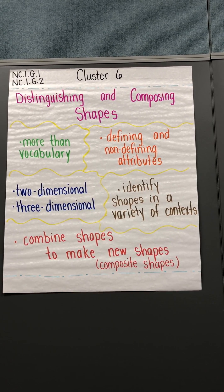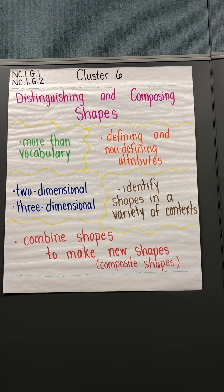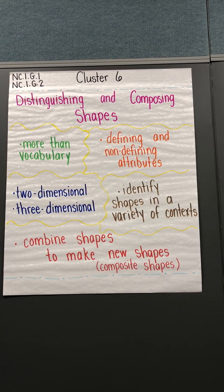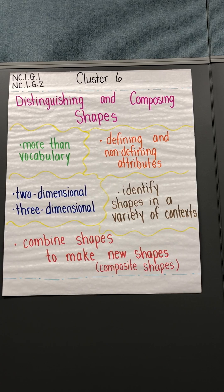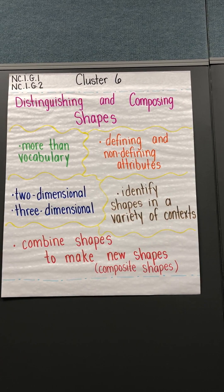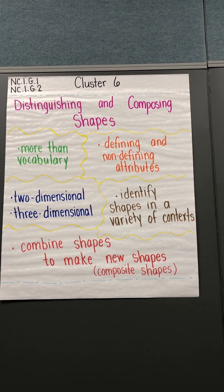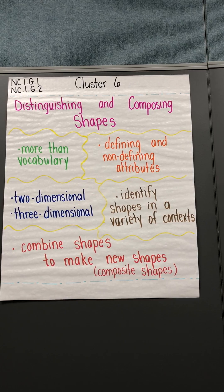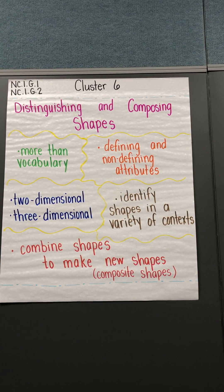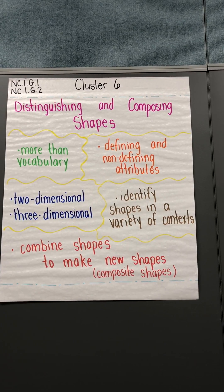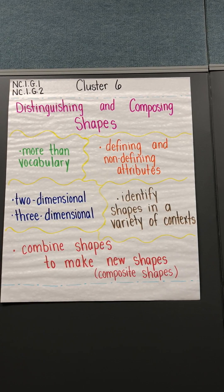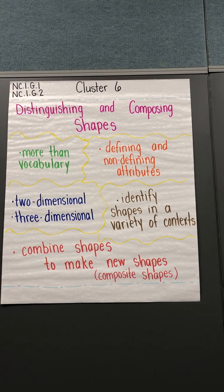NC1G2 involves creating a composite shape by making a two-dimensional composite shape using rectangles, squares, trapezoids, triangles, and half circles, naming the components of the new shape. It also includes making a three-dimensional composite shape using and naming the components of the new shape.